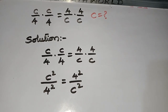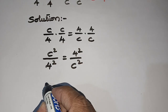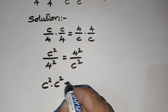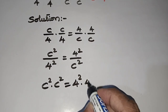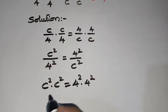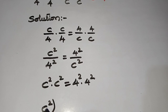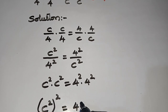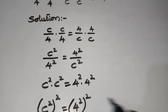Now cross multiplying: c squared times c squared is equal to 4 squared times 4 squared. c squared times c squared is (c²)² and 4 squared times 4 squared is (4²)².